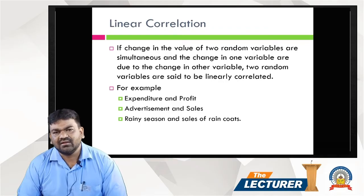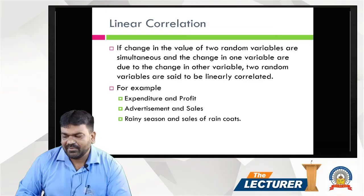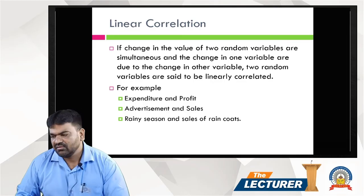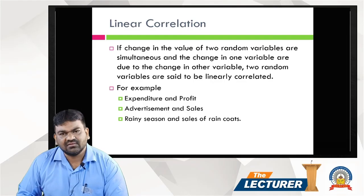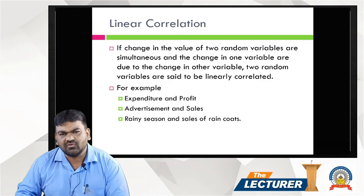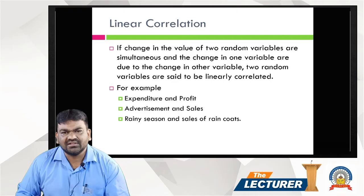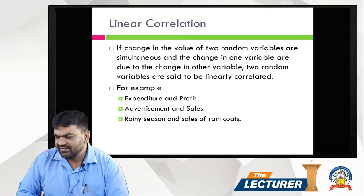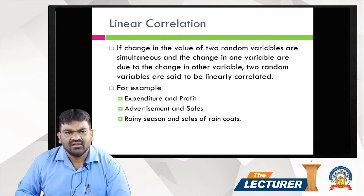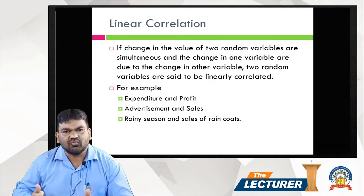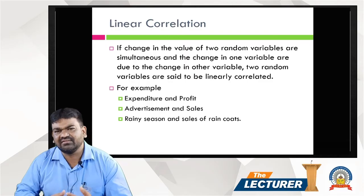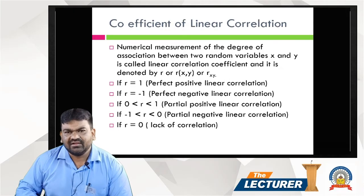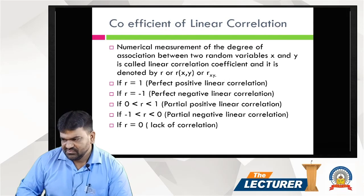Two variables are said to be in linear correlation when they are interlinked variables and we want to find the relation between them — that is called linear correlation. For example, expenditure and profit: if expenditure is high, profit decreases; if expenditure decreases, profit increases. Another example is advertisement and sales: the more a company spends on advertisement, the more sales increase. Similarly, rainy season and sale of raincoats are interlinked.